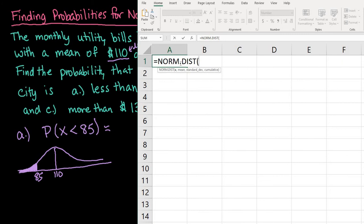We'll do equals NORM.DIST. X is 85, then the mean is 110, standard deviation is 13. Then we select true or false. True is the cumulative distribution function, while false is for one exact value. We want less than 85, so we use true for cumulative.